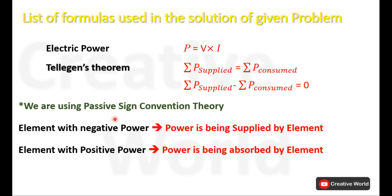We will also be using the passive sign convention. According to this theory, elements with negative power will be considered as power suppliers, and elements with positive power will be considered as power absorbers.